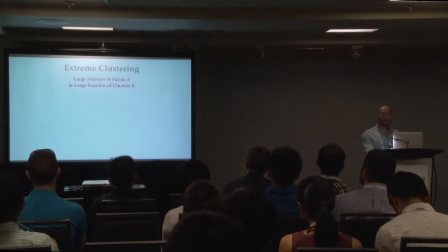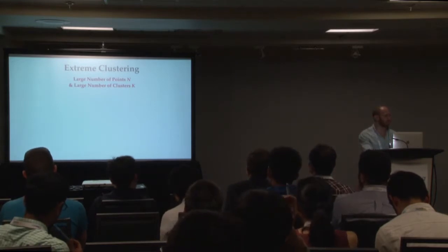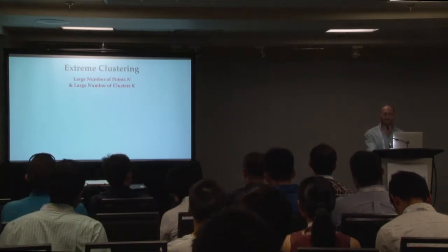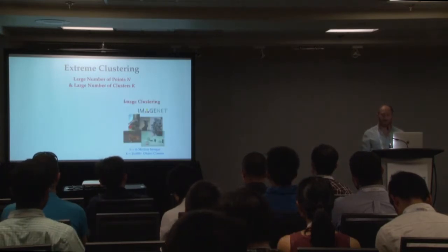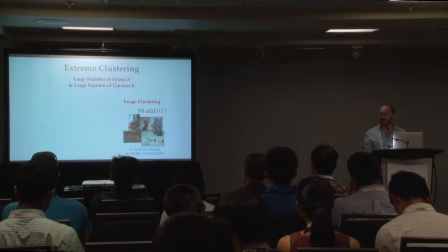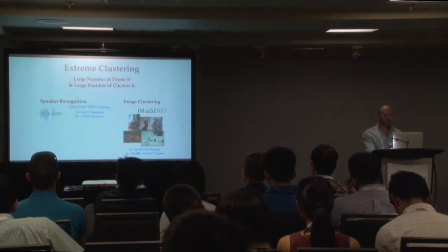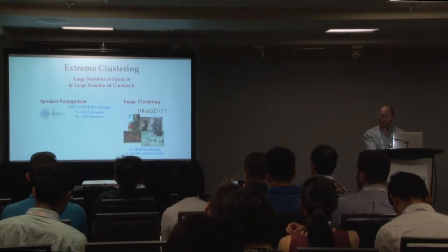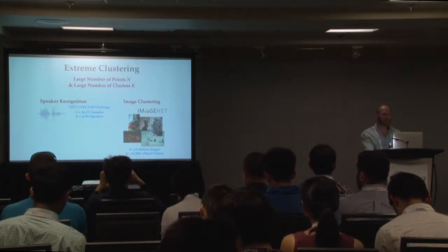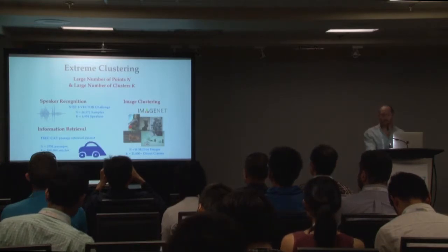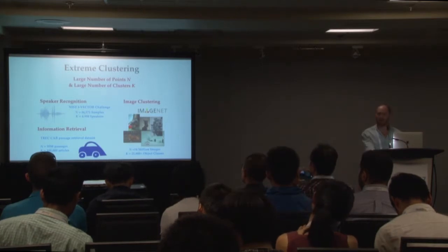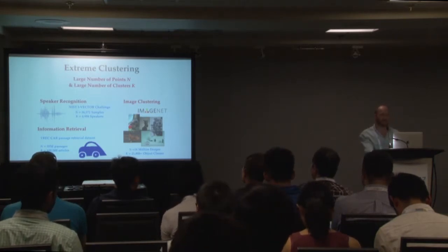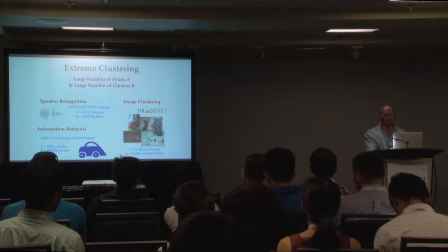When I say extreme clustering, I mean large-scale clustering problems where the number of points n is very large, but we also expect that the number of clusters k is very large. We find a lot of these data sets in practice. For example, the ImageNet data set contains 14 million images from over 21,000 classes. Another example is the NIST iVector Challenge data set — 36,000 audio samples from 5,000 speakers. In information retrieval, there's the TREC CAR data set with 35 million passages from 100,000 articles. Power law data sets tend to exhibit this large n, large k property.